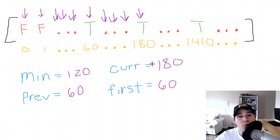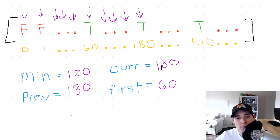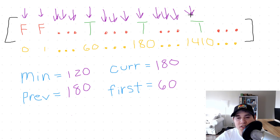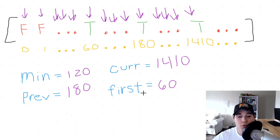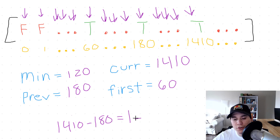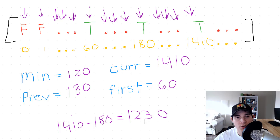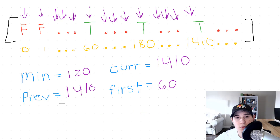The final step is to move previous to whatever current is, so previous is now 180. We continue iterating all the way up to 1410, where we have another true, so current becomes 1410. We compute 1410 minus 180, which is 1230. Since 120 is still less than 1230, we don't update the minimum. Then we set previous equal to 1410.